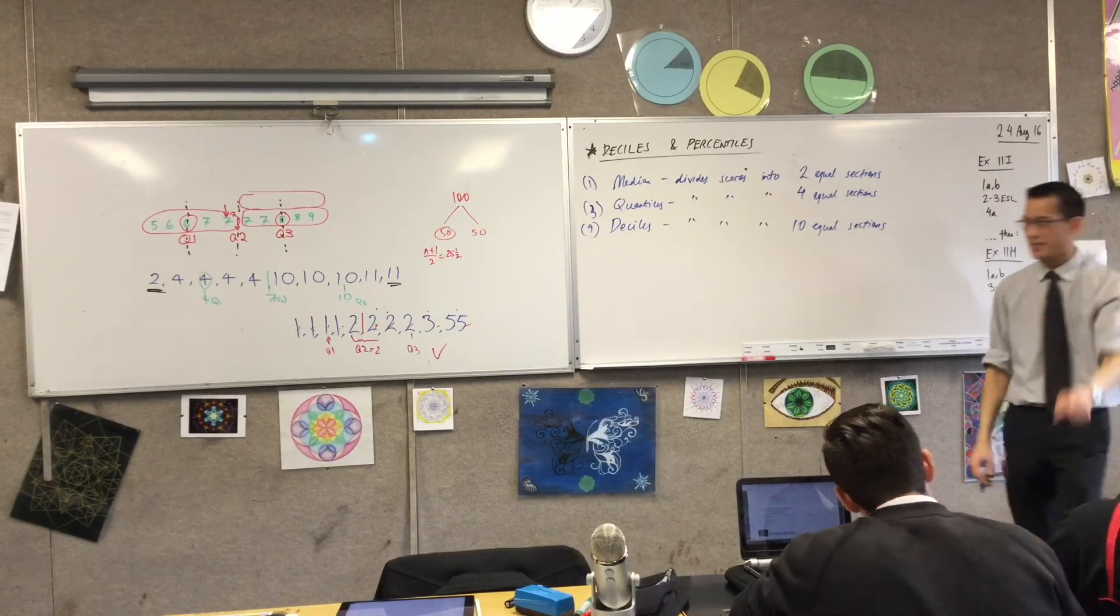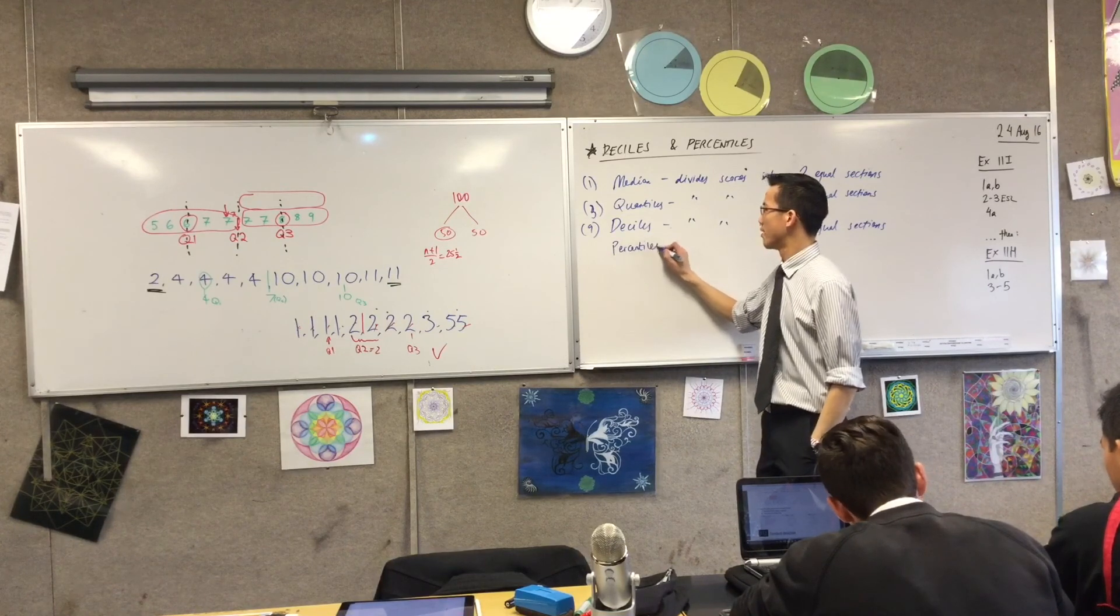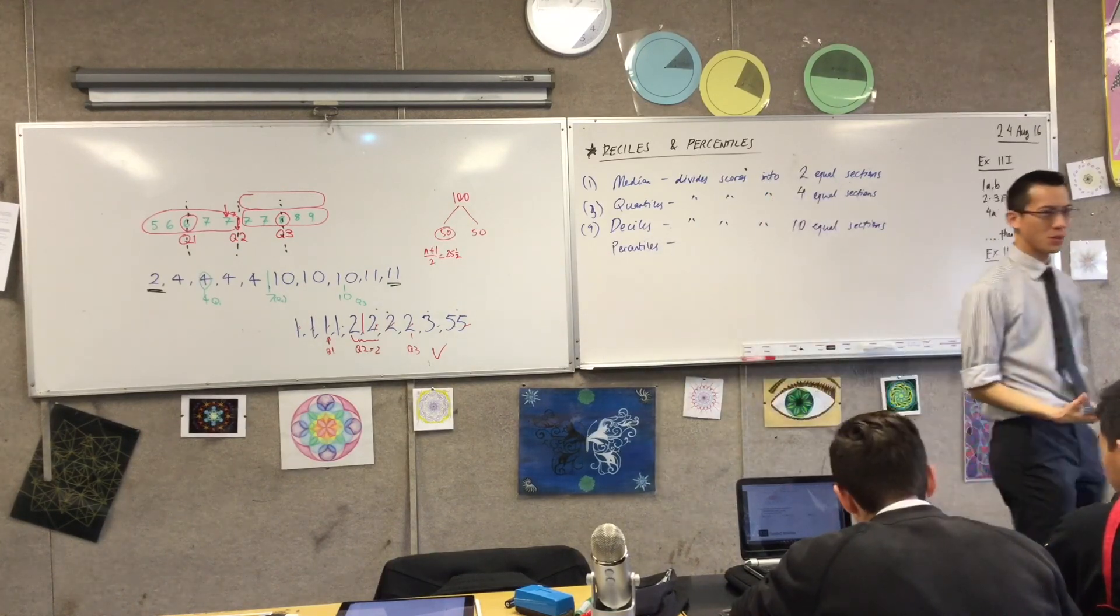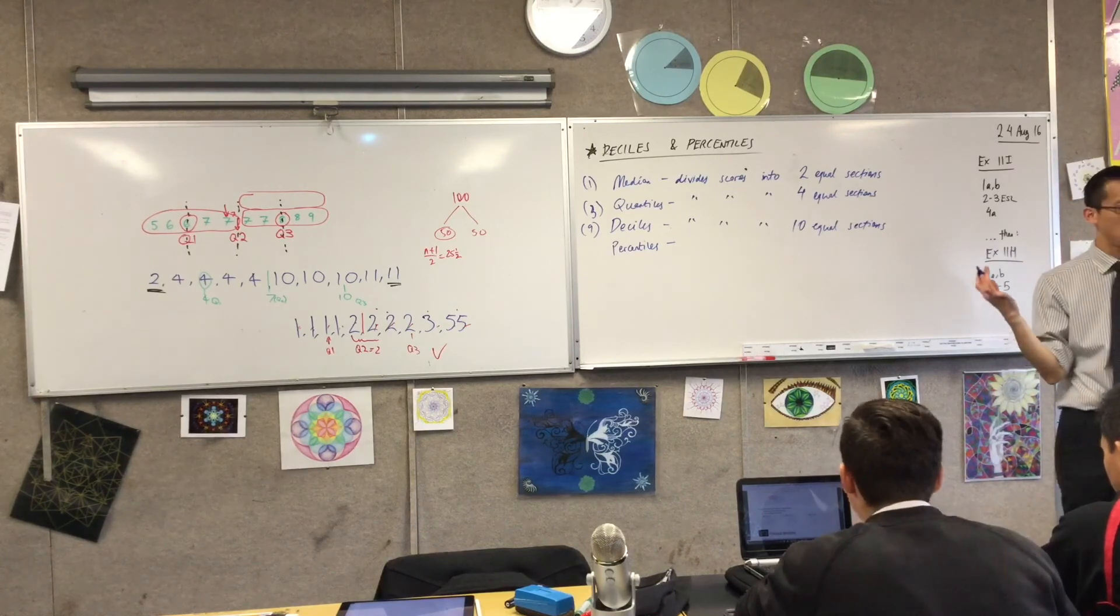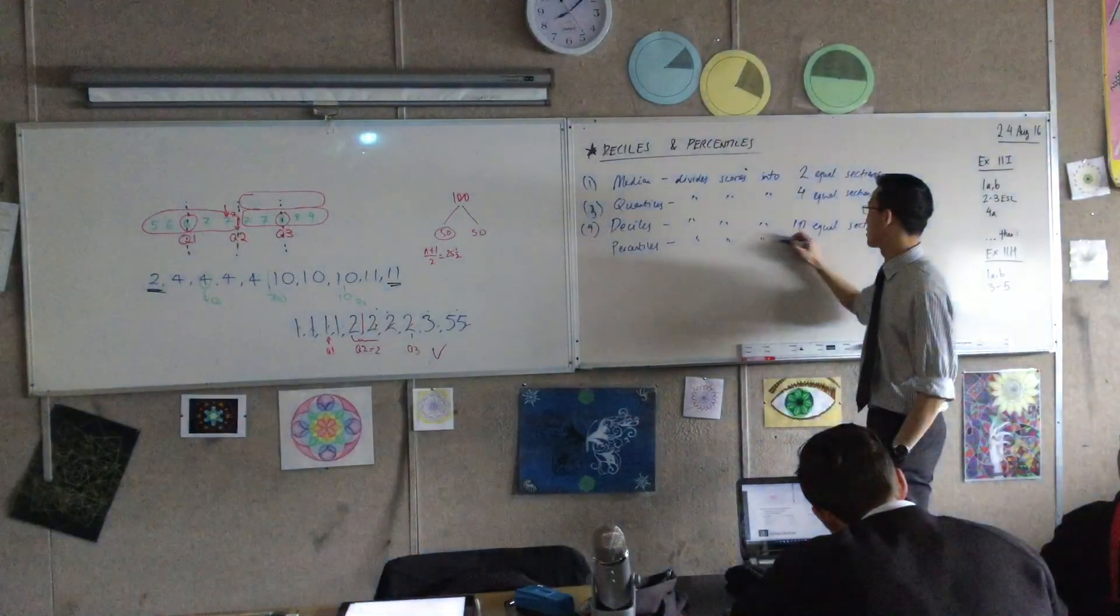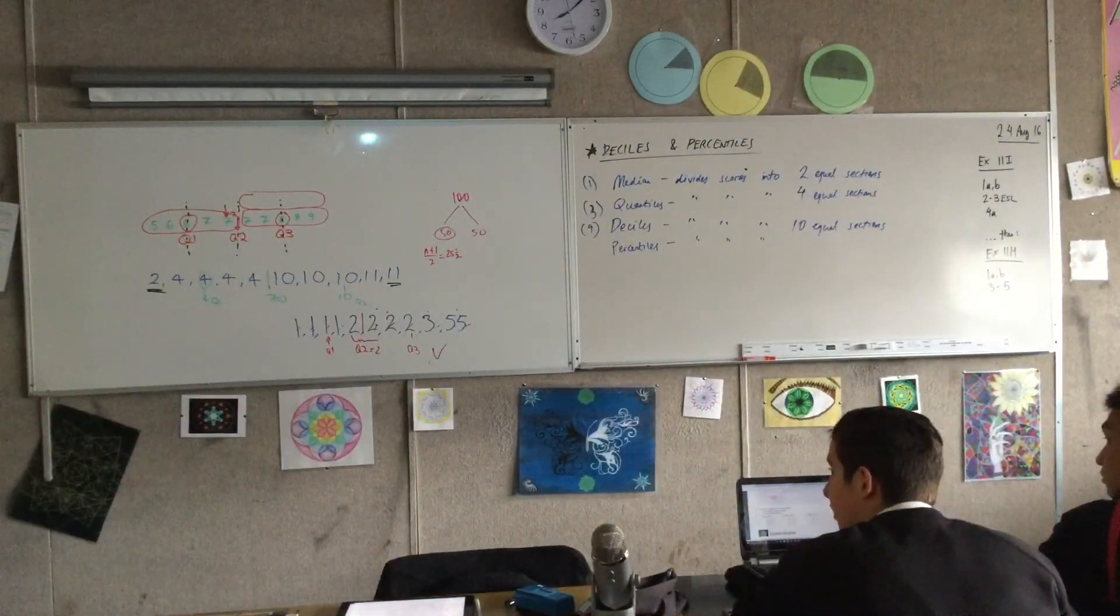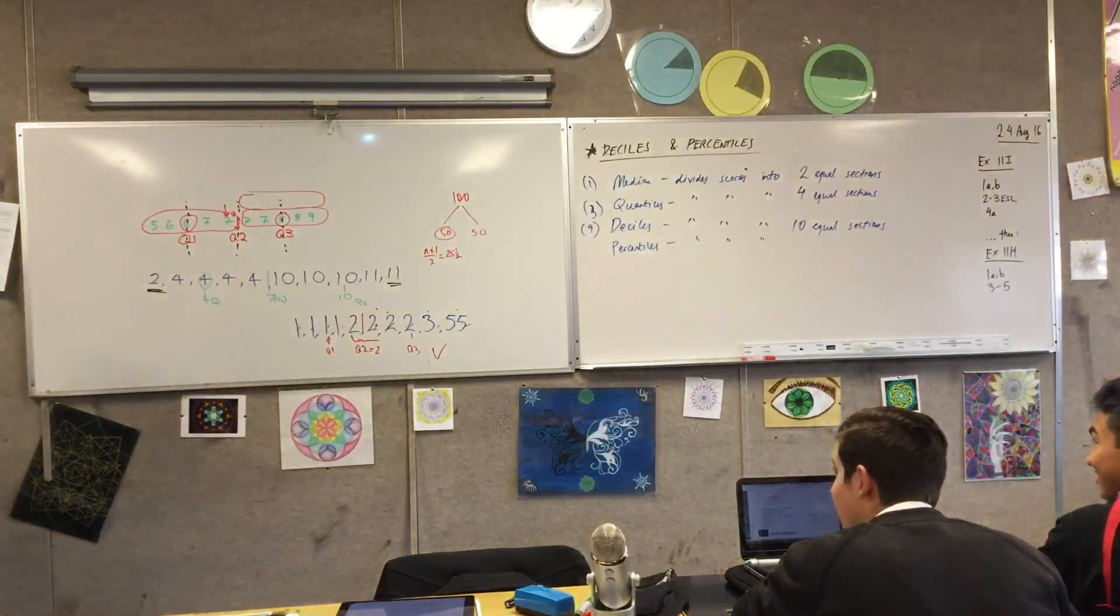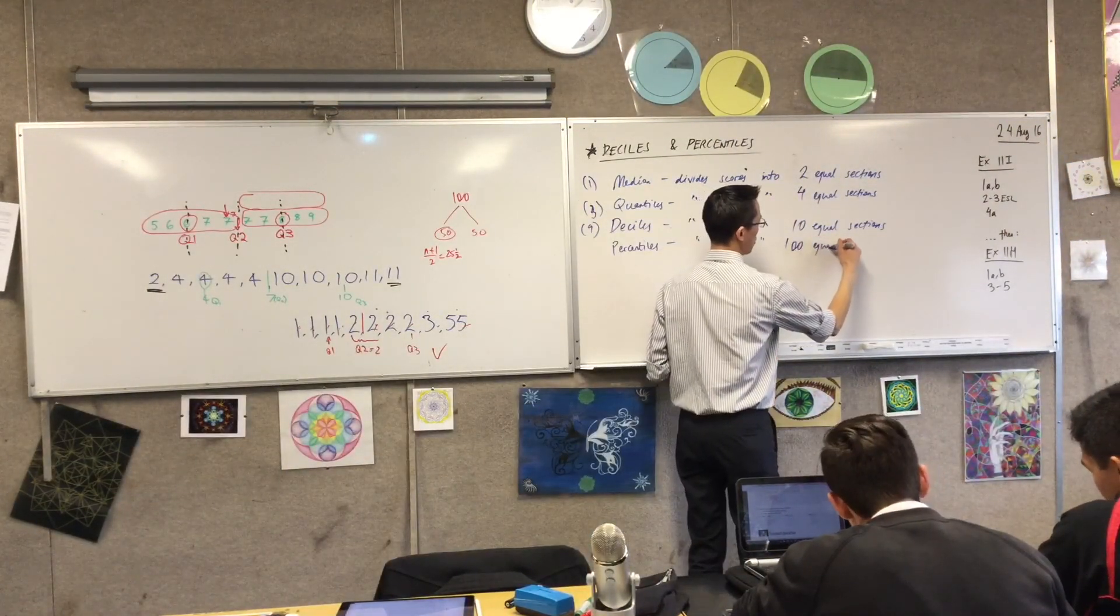Going on, one last step, the idea of a percentile. You don't need me to tell you what this next one's going to be. You're going to divide all your scores into 100 equal sections.